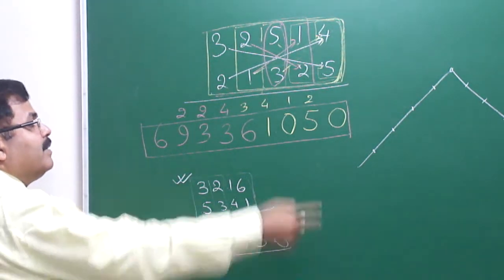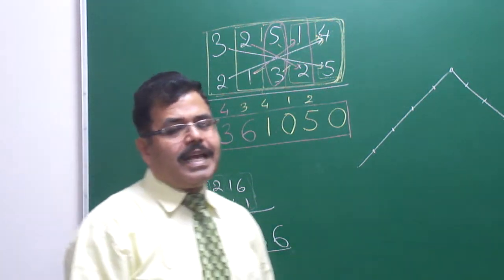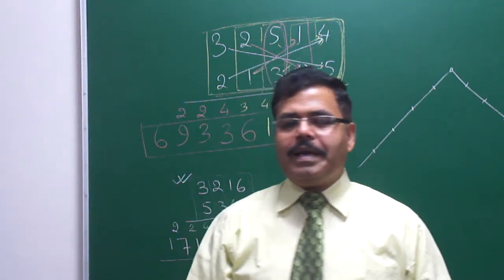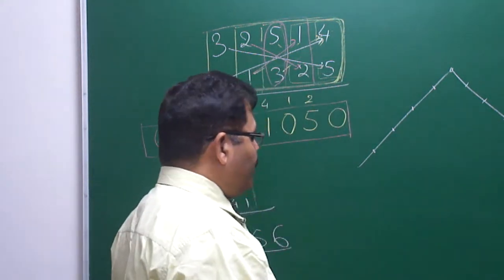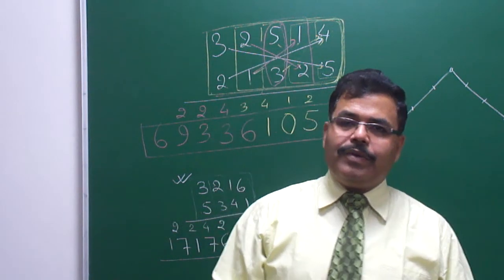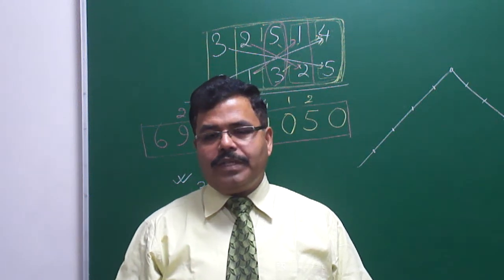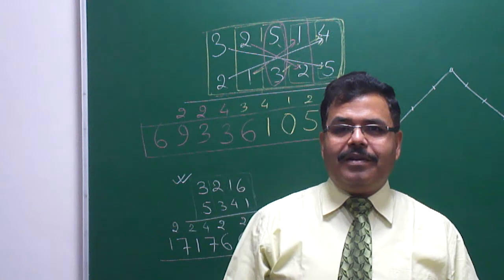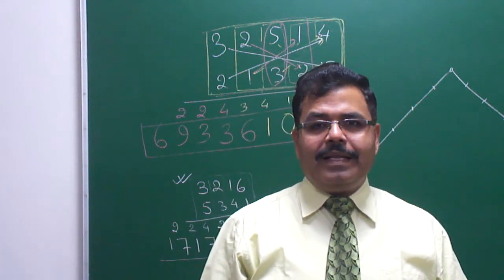So that is the product. This same process can be applied for four-digit by four-digit, five-digit by five-digit, six-digit by six-digit, and so on. You will be able to complete all those in one line, just as we discussed in the previous video lecture. Thank you very much — I hope you got it and will enjoy the next Tricks and Techniques class. Till then, bye bye!